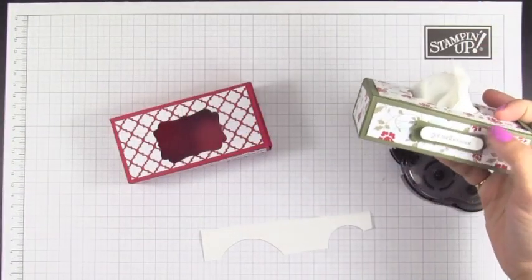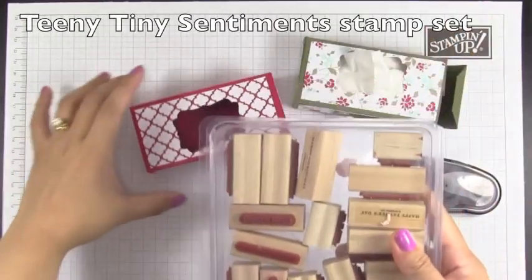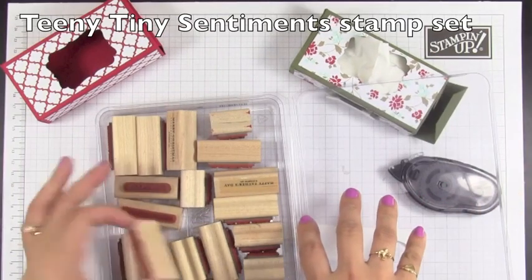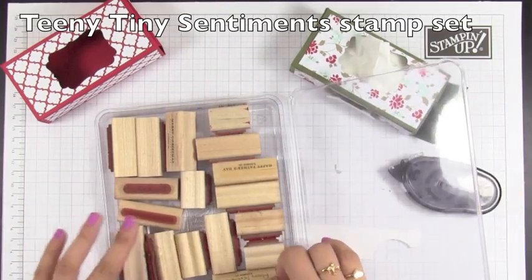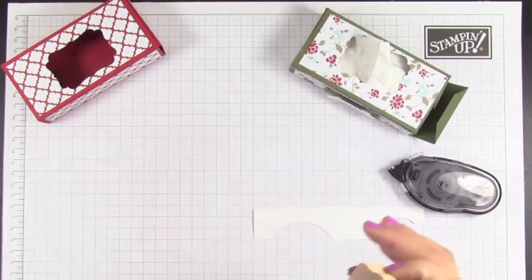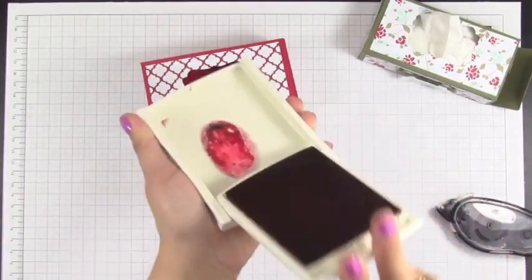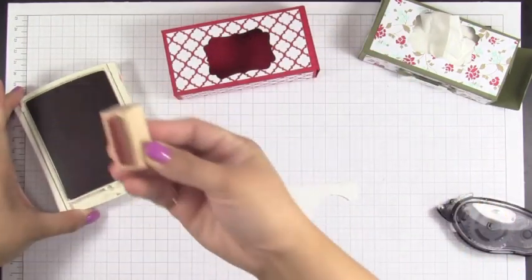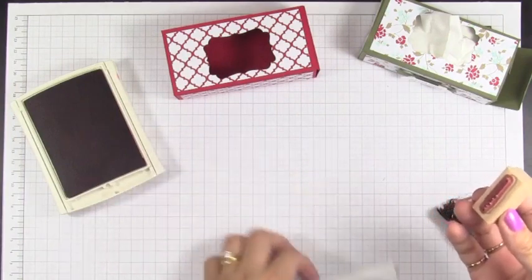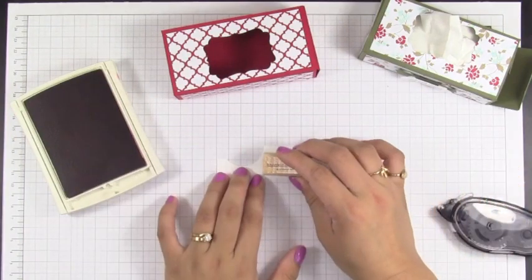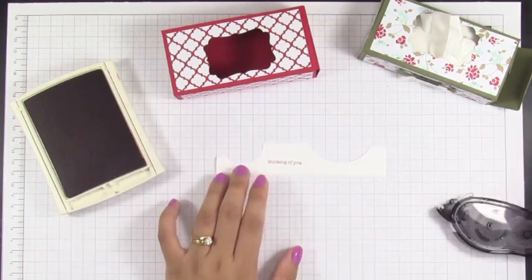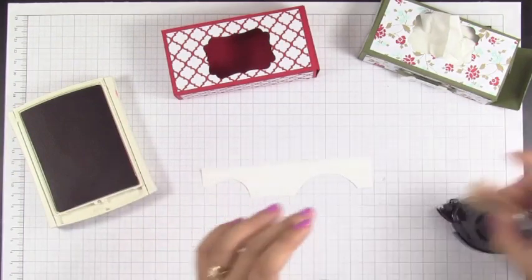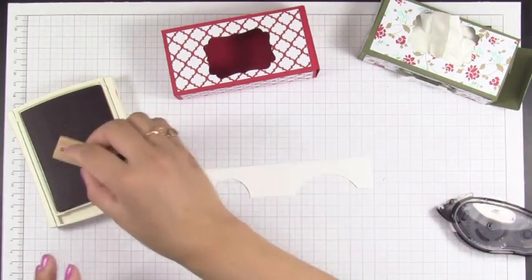I can't find my Get Well Wishes sentiment, so we're going to use a different one. And I think I'm going to use, let's see, Thinking of You. And I'm going to ink it up with a real red ink. I swear I was just holding it a while ago. I can't find it but anyways, this is Whisper White and stamp this one. Oh, I smudge it. I don't like it. So I'm going to turn it over, try it one more time.